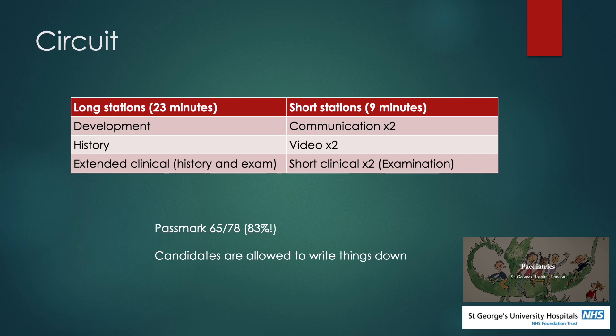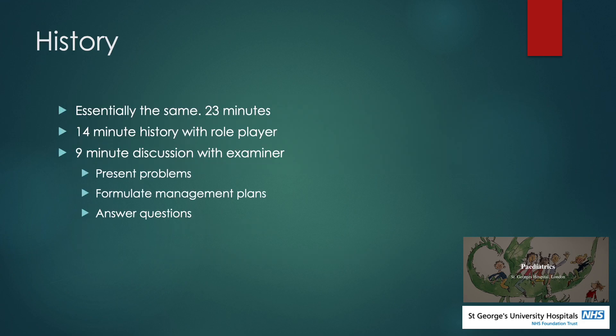As you can see, the pass mark is pretty high, so we're all a bit anxious about that. Candidates are allowed to write things down both in the four-minute preparation time before each station and during the stations. The history is essentially the exact same as previously — it's 23 minutes long, a 14-minute history with a role player and then nine minutes to discuss with the examiner.